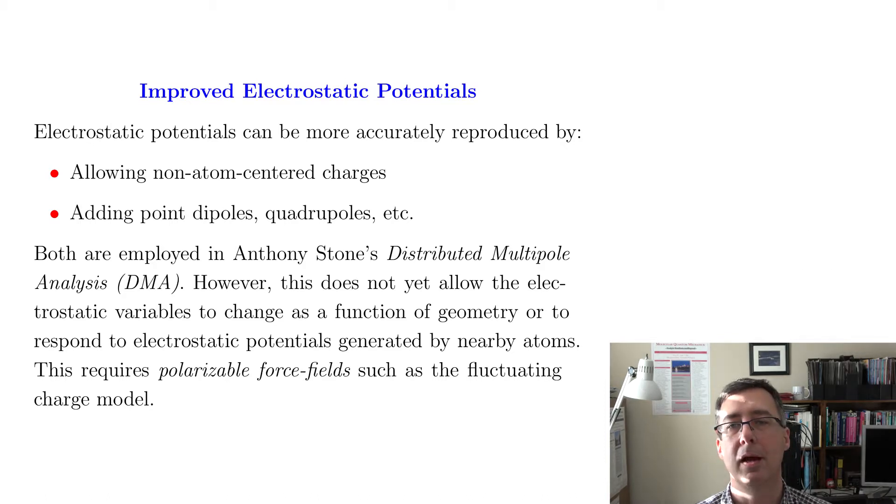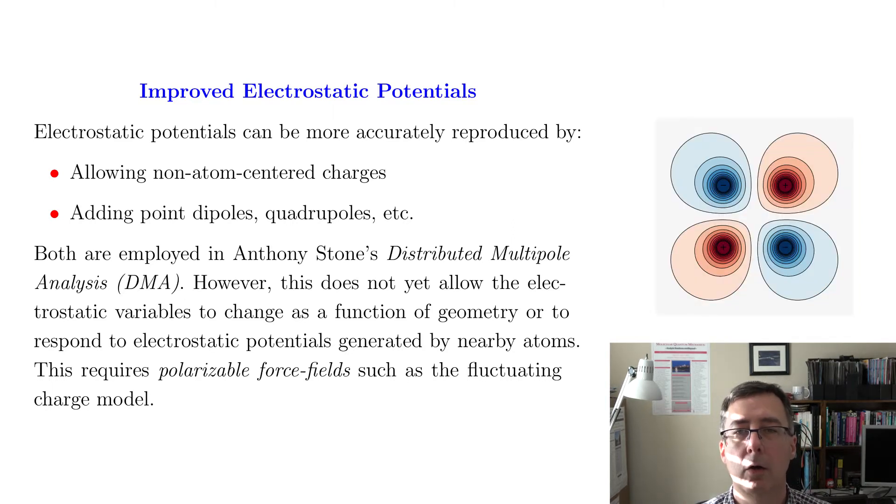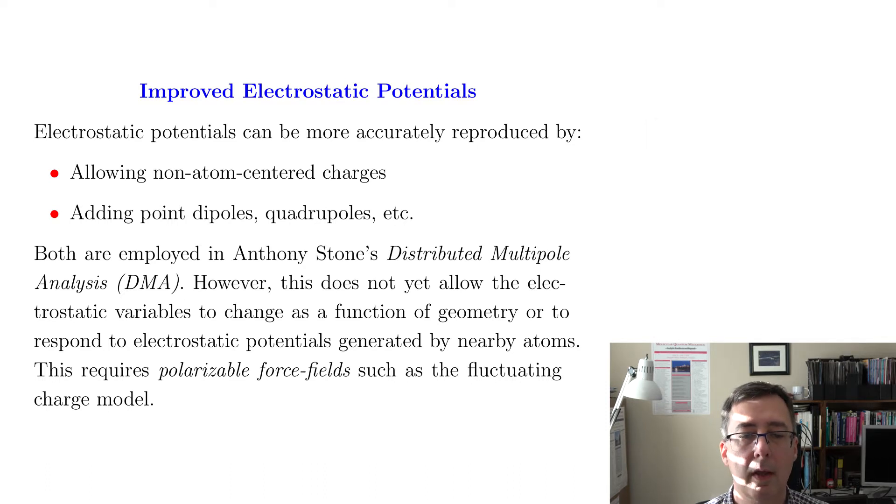You could also say life is not only about charges. You could have point dipoles or point quadrupoles. Now a dipole is just an uneven distribution of charge where I have sort of a difference as I go from one direction to another direction along one axis. And a quadrupole is where I could have sort of four kind of different locations to think about the charge, and you could go higher and higher and higher. So either of these approaches or both could potentially give you a little bit more accuracy. And one example of this would be Anthony Stone's distributed multipole analysis, which is a way to figure out where to put in point charges, but also point dipoles and point quadrupoles.